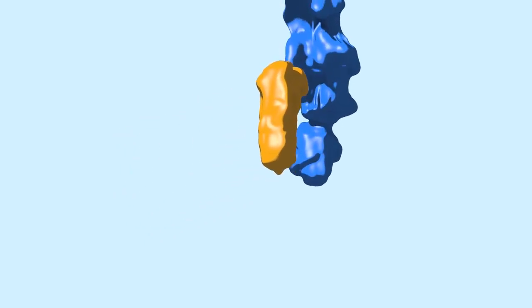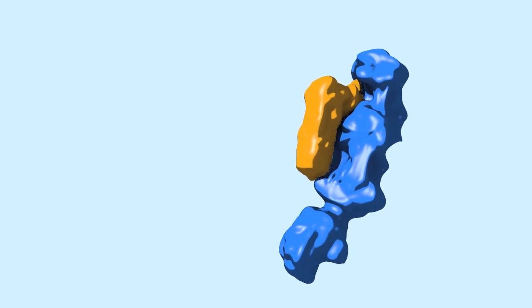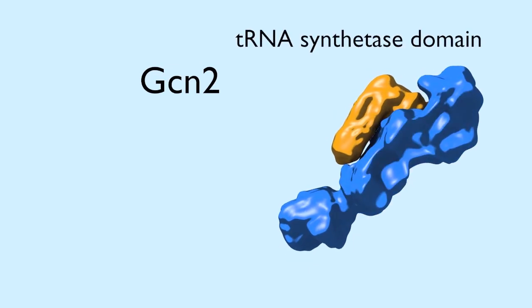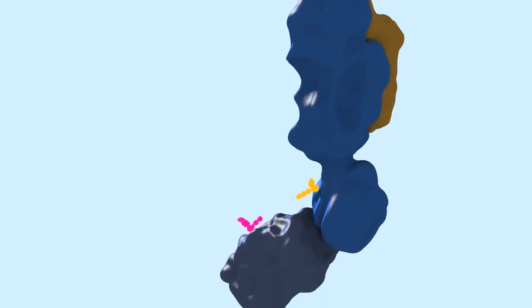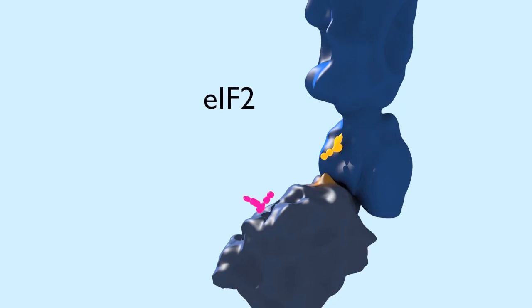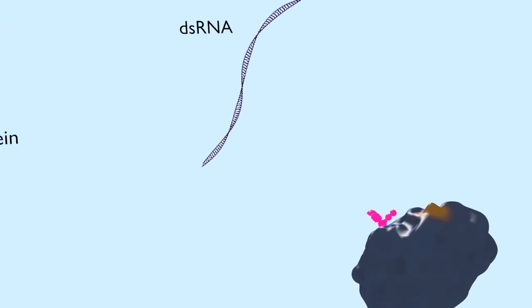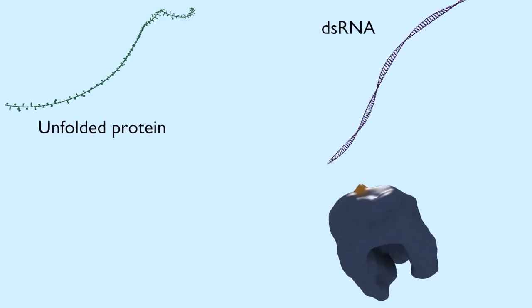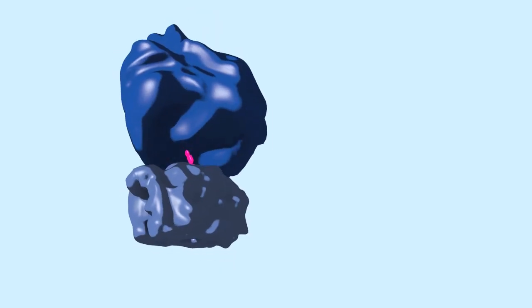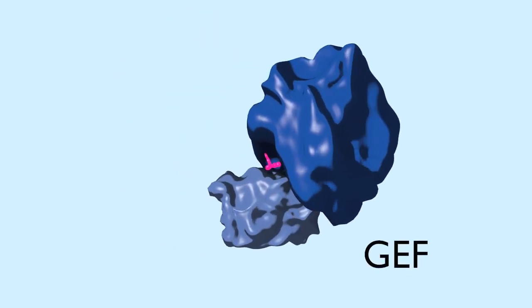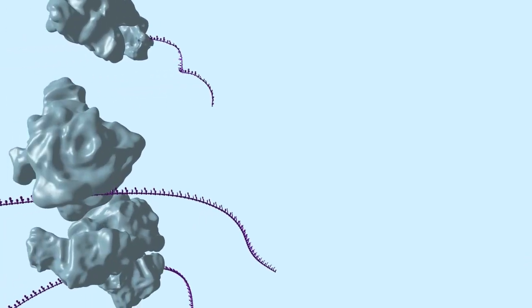Eukaryotic cells also respond to uncharged tRNAs in the cell, but the response is different at the molecular level. In eukaryotes, the uncharged tRNAs do not bind to the ribosome, but instead bind to a kinase known as GCN2, which has a tRNA synthetase-like domain in addition to its kinase domain. Binding of uncharged tRNA activates GCN2, which in turn phosphorylates serine 51 of the alpha subunit of the core initiation factor EIF2. Phosphorylation of EIF2 is central to many cellular signaling pathways, including the response to unfolded proteins and double-stranded viral RNA. Once phosphorylated, EIF2 binds more stably to its guanine exchange factor, or GEF, thus leading to overall reduced levels of active EIF2 in the cell. This leads to globally decreased rates of translation on almost all mRNAs.